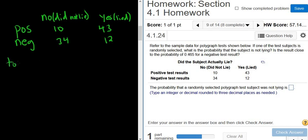So like the total number of negatives, total neg would be 34 plus 12, which is 46. That's just an example. If you did total lied, that would be 43 plus 12. So that would be 45.